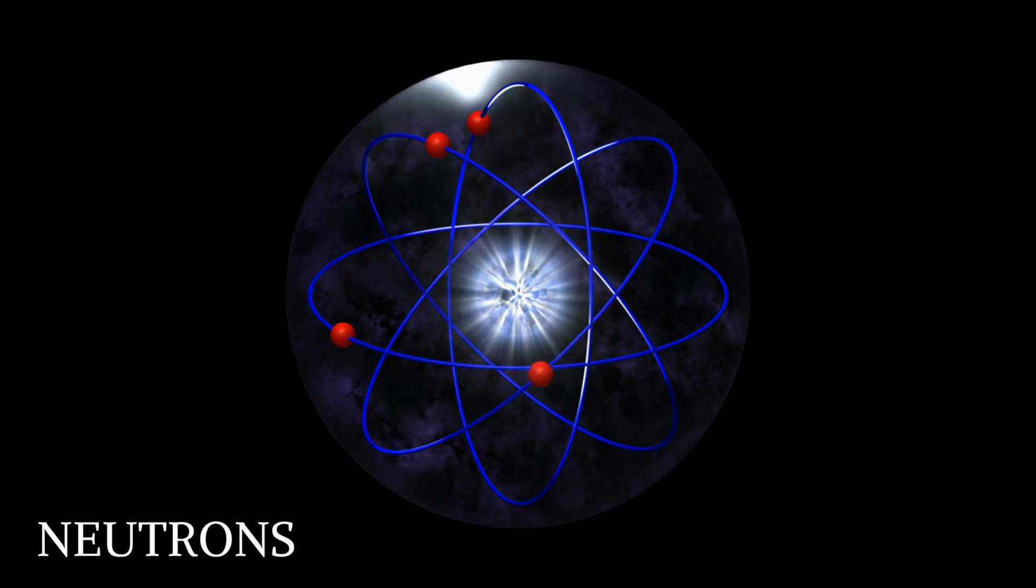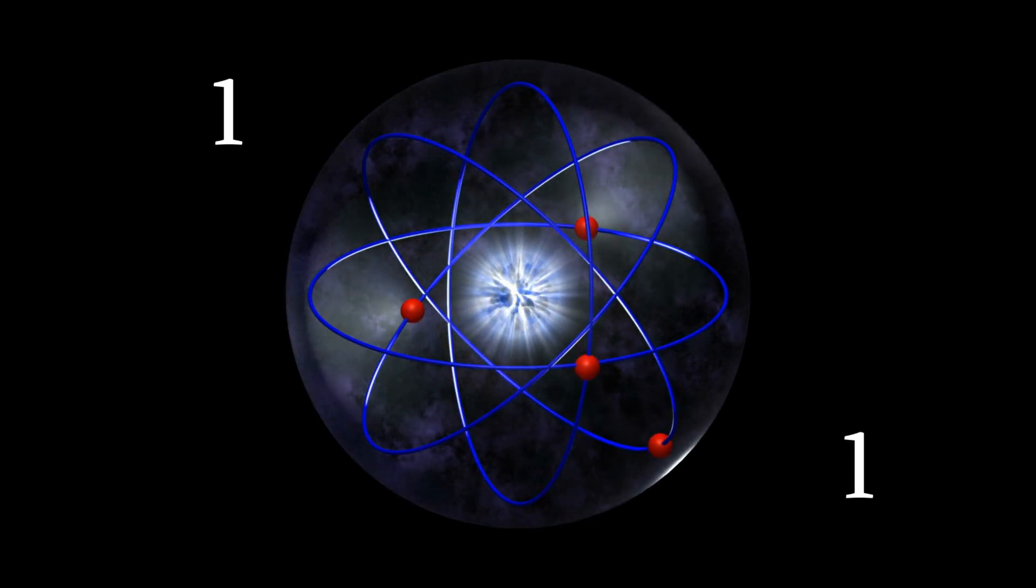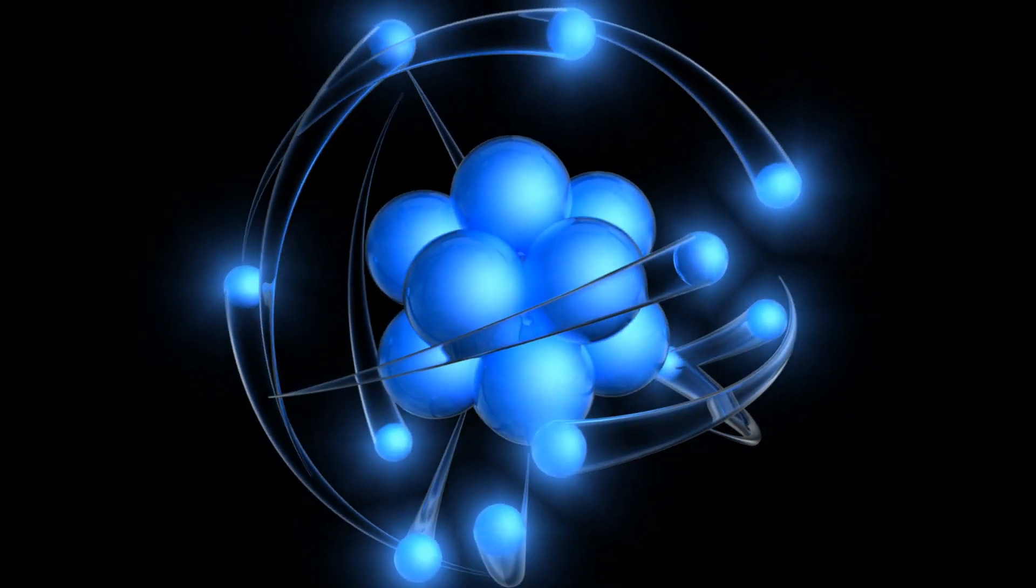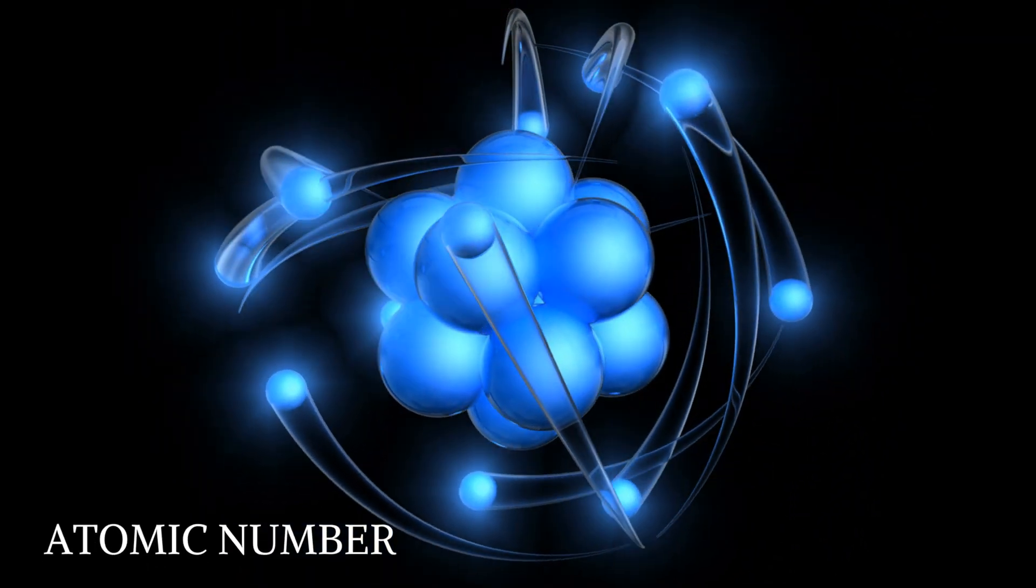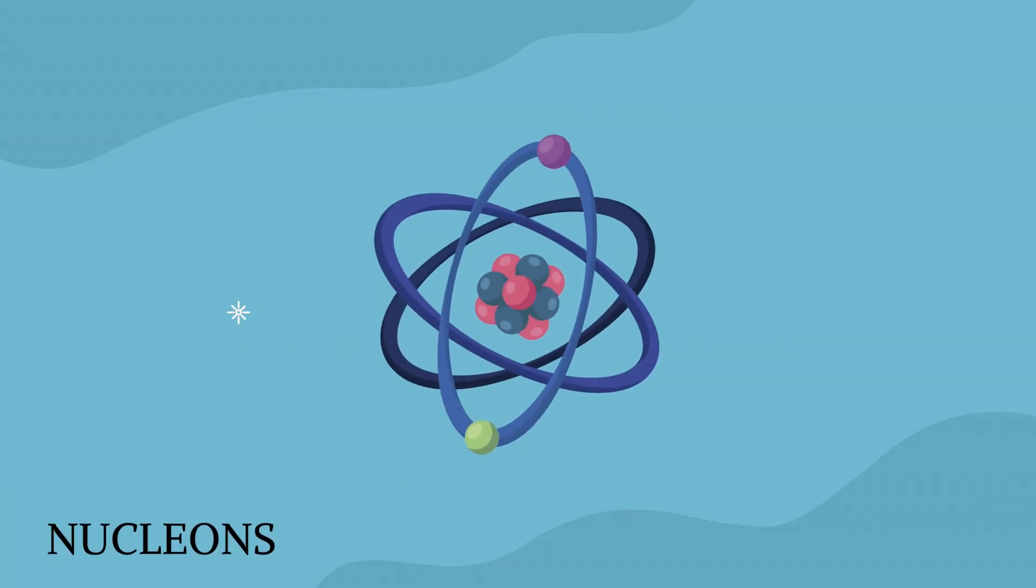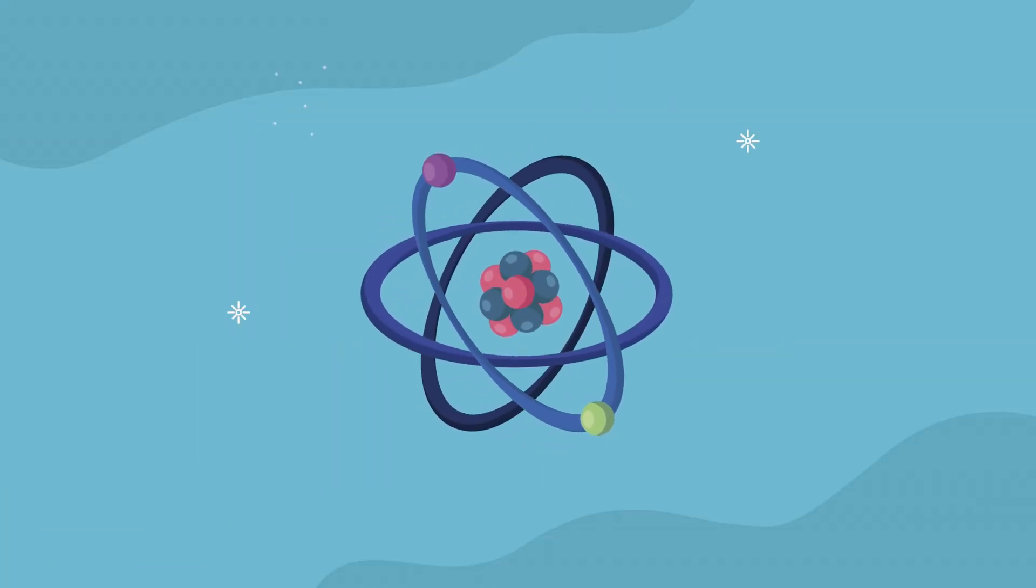The number of protons in an atom of a given element is known as its atomic number. Nucleons are made up of protons and neutrons, and they are located in the atomic nucleus together.